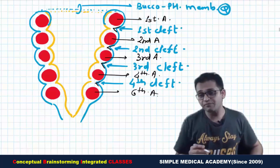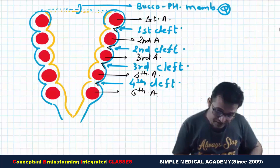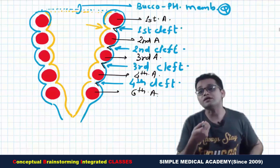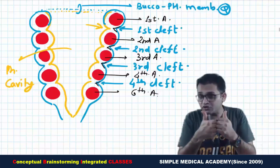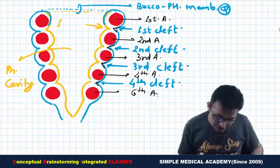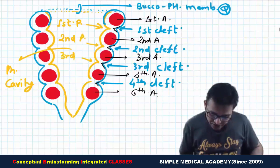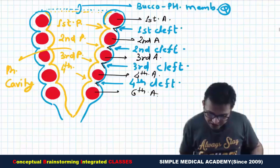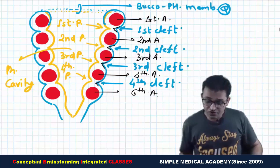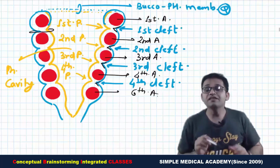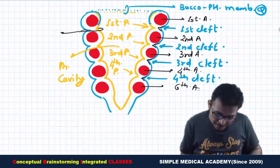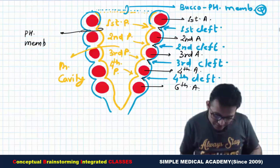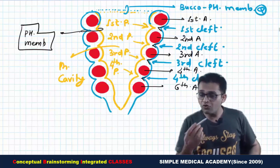There are four clefts: first, second, third, and fourth cleft — MCQ: four clefts persist in the human embryo. The endoderm outbulges between two arches when looking from inside the pharyngeal cavity, known as the pouch: first pouch, second pouch, third pouch, and fourth pouch. The area where ectoderm and endoderm meet with very little mesoderm in between is known as the pharyngeal membrane.